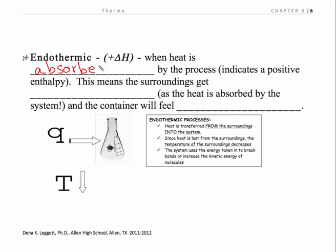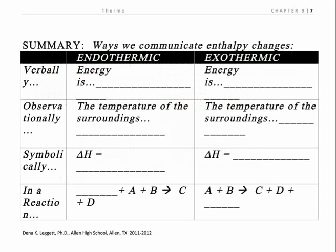Endothermic is when heat is absorbed within a process — heat is required, and delta H is positive. The surroundings are going to get cold. If you remind me, I'll do a little demo on this — it uses barium but it's pretty cool because you see a spontaneous endothermic process. The heat gets absorbed by the system, so your hand and the container will feel colder.